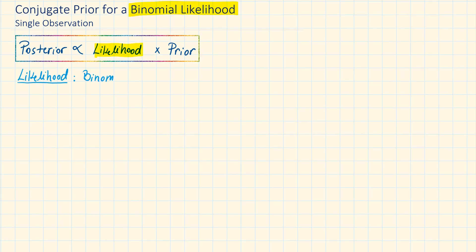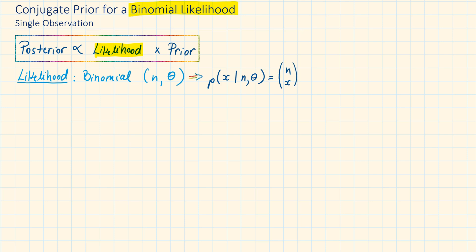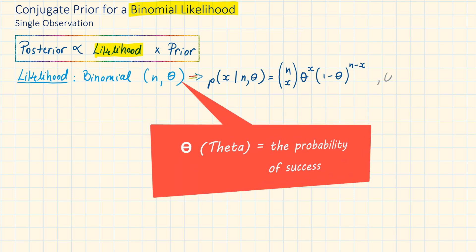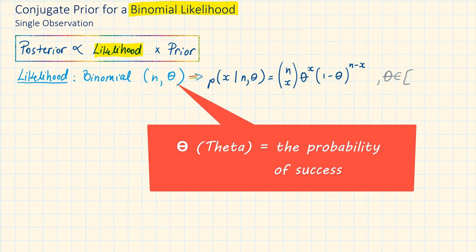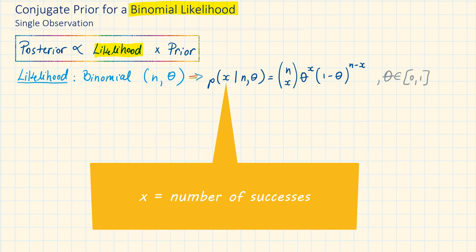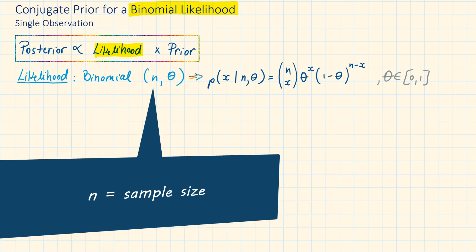The likelihood is a binomial with parameters n and theta. We can write this distribution as: the probability of x given n and theta is equal to n choose x, times theta to the power of x, times 1 minus theta to the power of n minus x. Theta represents the probability of success and is a value between 0 and 1. X represents the number of successes, and n represents the total sample size.